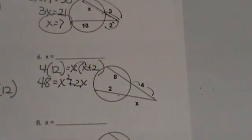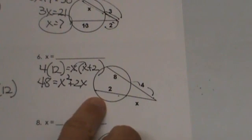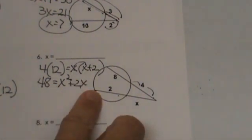Because we don't know the outside, it will make it a little bit messier. So we are going to get 48 equals x times x is x², x times 2 is plus 2x. This is not quite so simple anymore. We now have a quadratic.